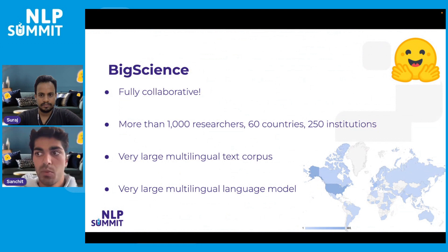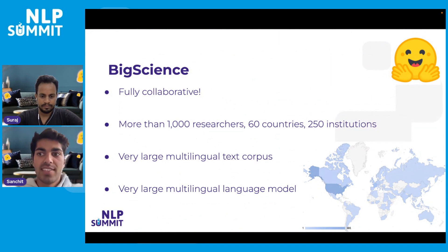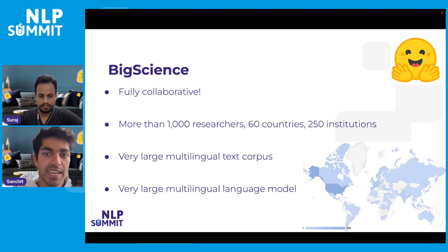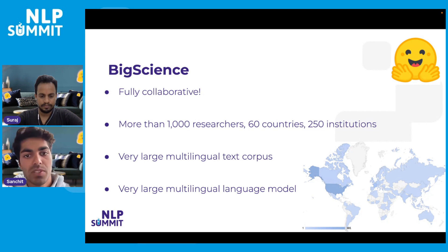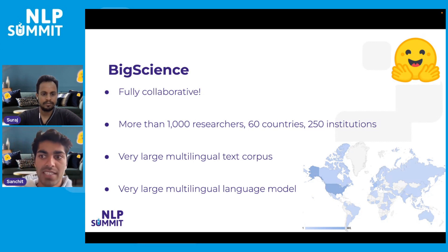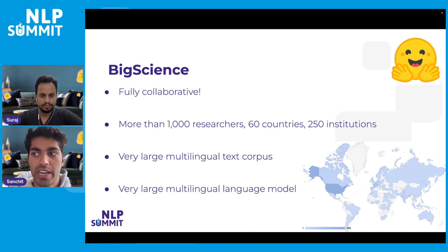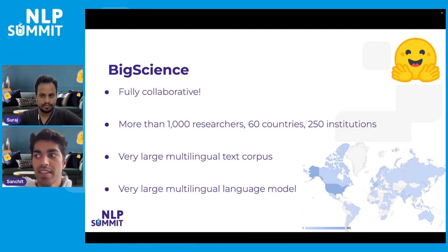Before we jump into the specifics of the BLOOM model, it's worth acknowledging the wider project it forms part of. Big Science is a one-year project that seeks to train the largest multilingual language model to date. What's unique about Big Science is its fully collaborative, open source, and open science approach. Fundamentally, Big Science wants to change the way we approach large language model training by pushing for the creation of large-scale artifacts that can be used by the research community.